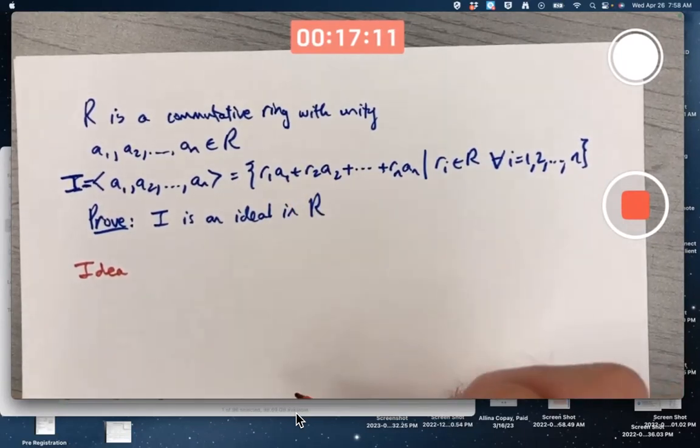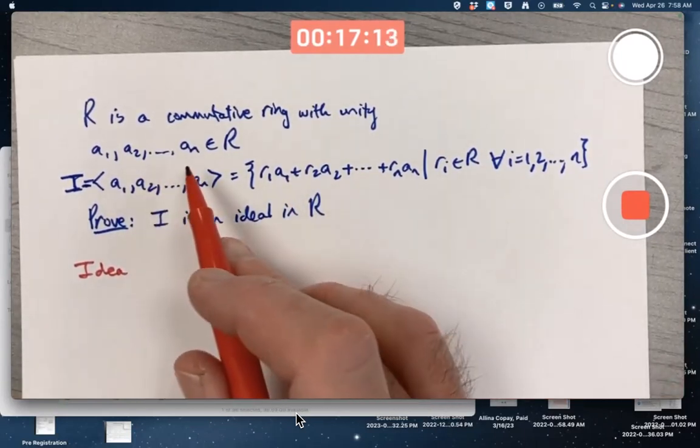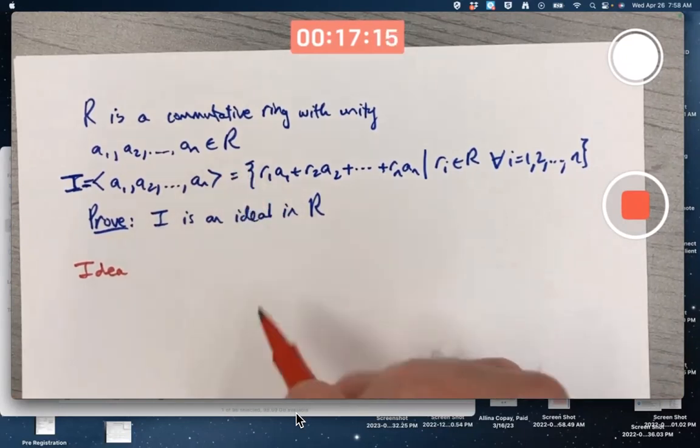The problem is R is a commutative ring with unity, and we've got N elements, A1 through AN, from the ring.